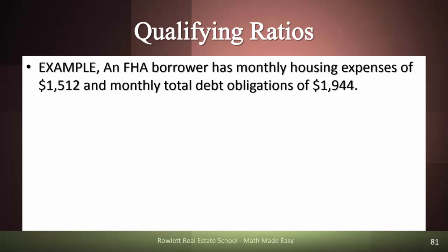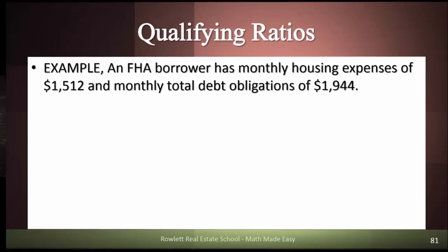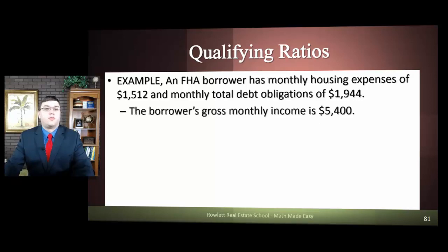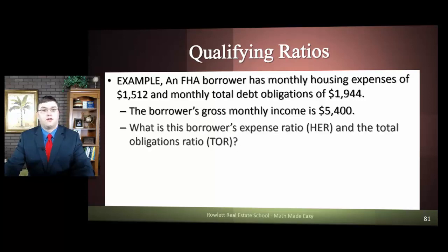Let's walk through some examples on how to perform these calculations. An FHA borrower has monthly housing expenses of $1,512 and monthly total debt of $1,944. The borrower's gross monthly income is $5,400. What is the borrower's expense ratio and the total obligations ratio?